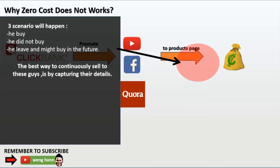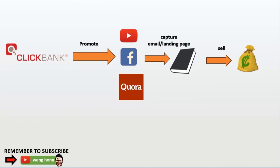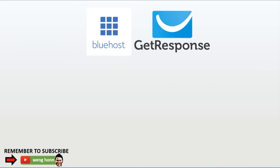If he leaves and comes back to buy, you may or may not get the commission depending on which platform you use. So the best way to continuously sell to these people is by capturing their details. The flow is: you create a $5 eBook, post your content on YouTube, Facebook, or forums, and instead of directing them straight to your product — what we call a landing page — direct them to download this eBook by giving you their personal details. This way, if they don't buy your product right away, you can keep selling to them on other products through your email list. You also have no risk of getting banned by social media or forums because the link you're sharing is not a long ugly affiliate link.